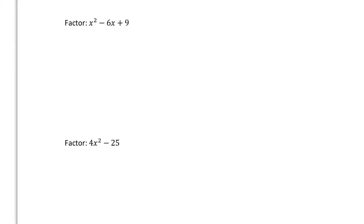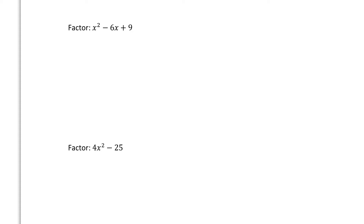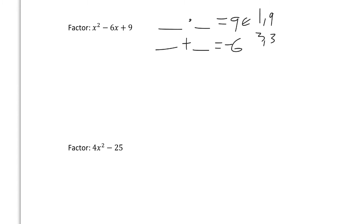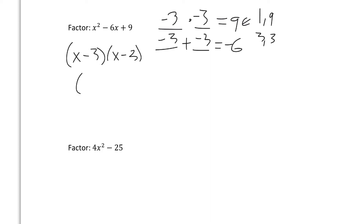Now let's try some factoring. Here we have x squared minus 6x plus 9, which means we need to find two numbers that multiply to give 9 and add to give negative 6. The numbers that multiply to 9 are 1 and 9, or 3 and 3. Negative 3 plus negative 3 gives negative 6, so our factor is x minus 3 times x minus 3, which we simplify as x minus 3 squared.